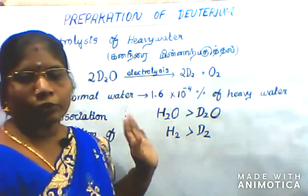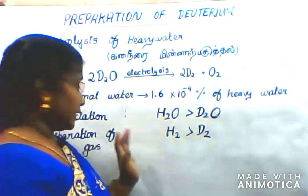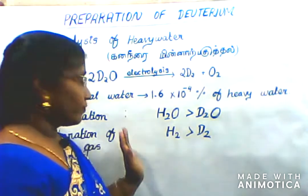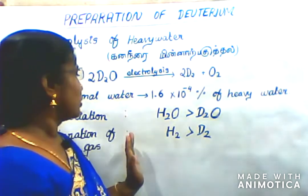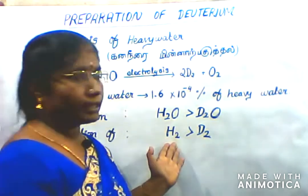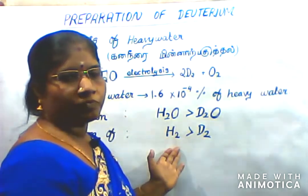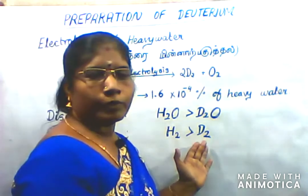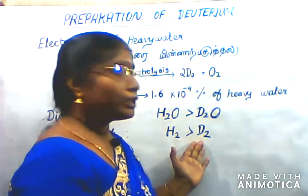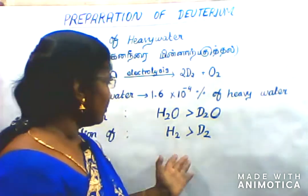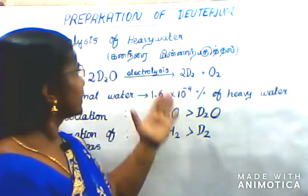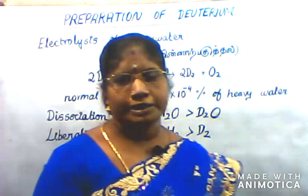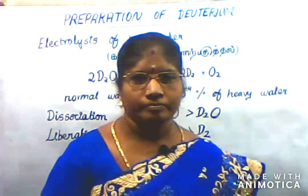During electrolysis, we need to liberate the gas. Hydrogen will first liberate, then last D2 will liberate. In this method, we do the preparation of deuterium.